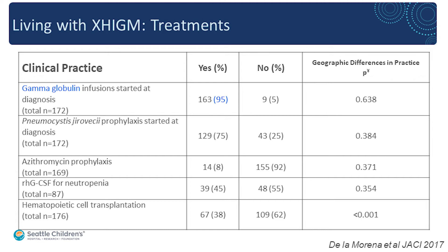We collected data on 176 patients from all over the world and asked physicians how they treated patients with X-linked hyper-IgM. There is a consensus that 95% of individuals were being treated with immunoglobulin infusions — critical because patients with X-linked hyper-IgM cannot make IgG. For pneumocystis prophylaxis, there is debate about when to use it and how long; about 75% of physicians were starting it at the time of diagnosis, but in about 25% of cases they were not.